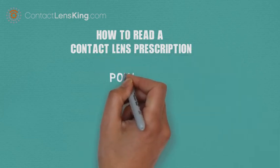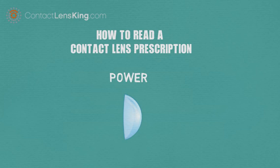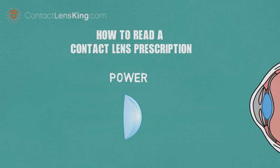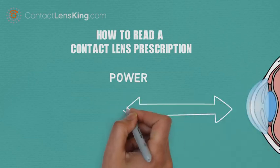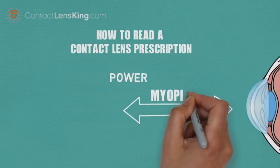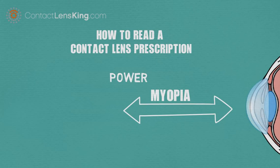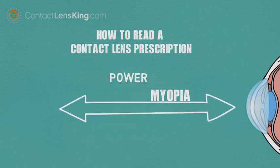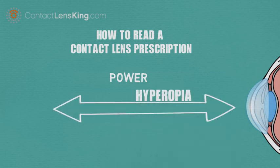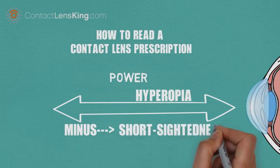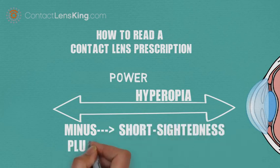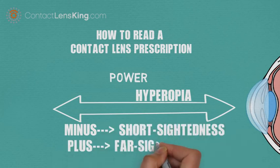Power. The power indicates the vision correction needed to correct for either short-sightedness, also known as myopia, or far-sightedness, also known as hyperopia. A minus power indicates short-sightedness, and a plus power corrects far-sightedness.